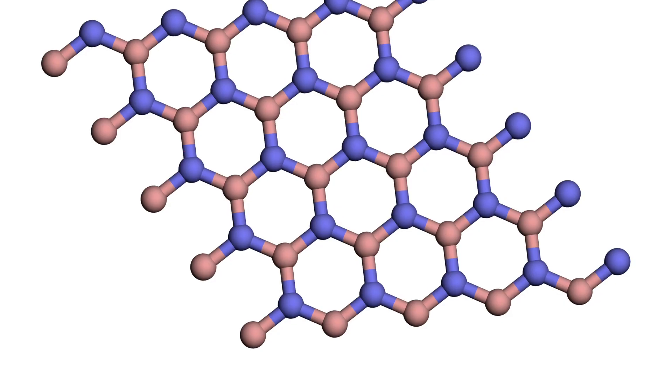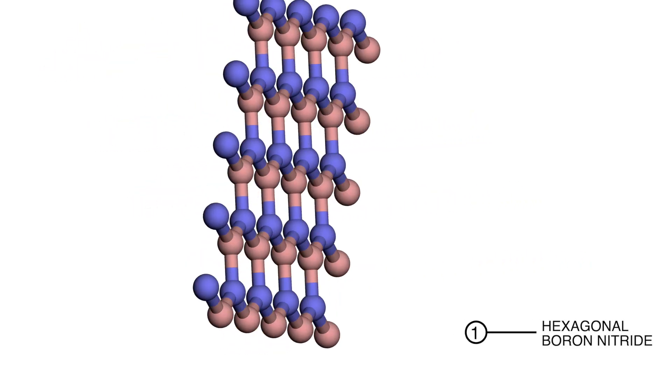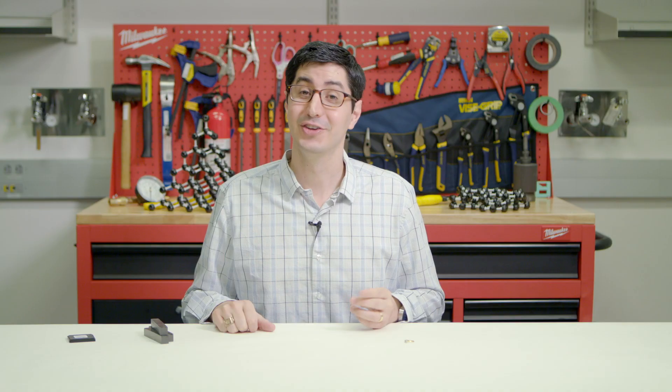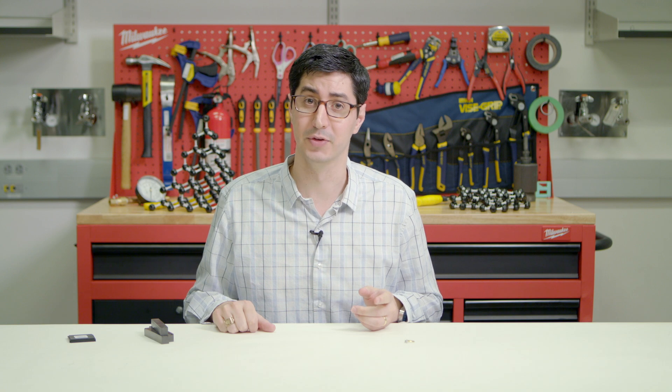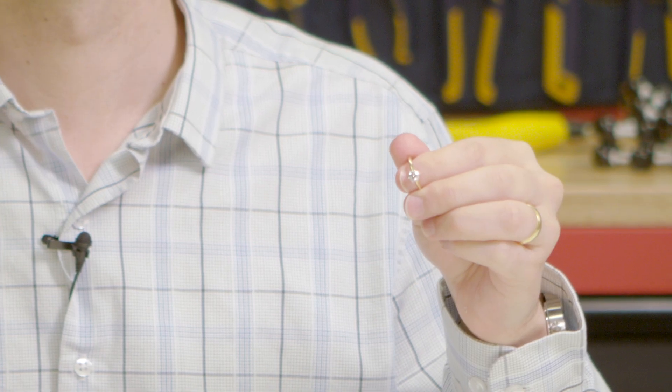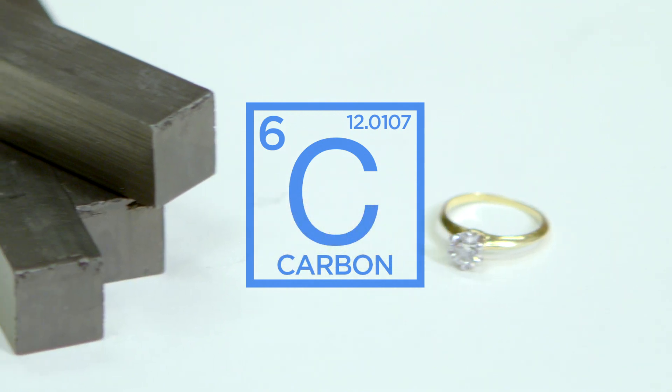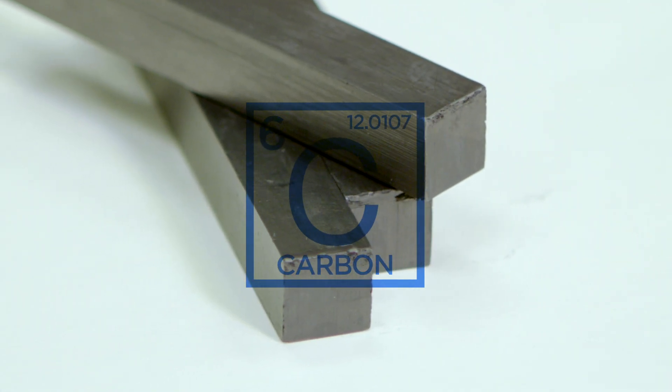Every day at Columbia we make nano devices by stacking 2D materials into complex structures. To understand what's special about 2D materials, let's look at two familiar things: a diamond ring and graphite, commonly called pencil lead. Both are made entirely of carbon, but graphite is a 2D material and diamond is a 3D, or bulk, material.